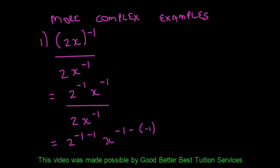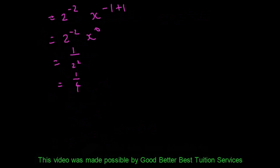Now we are dividing, and when we divide we subtract the exponents. The numerator has its own power of 1, so we get negative 1 minus 1 for 2, giving 2 to the power negative 2. For x, it's negative 1 minus negative 1, giving x to the power 0. That simplifies to 2 to the power negative 2 times x to the power 0, which equals 1 over 2 squared, or one quarter.